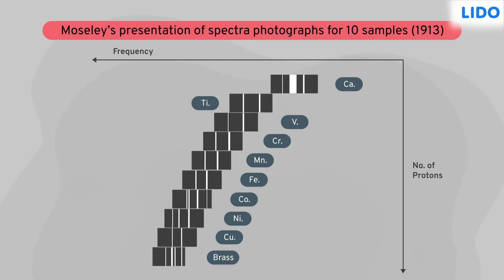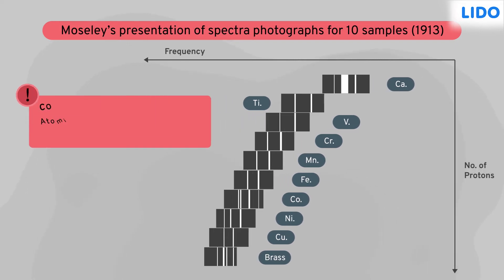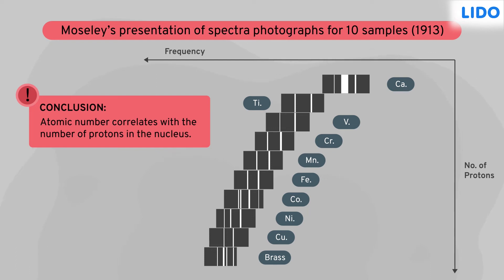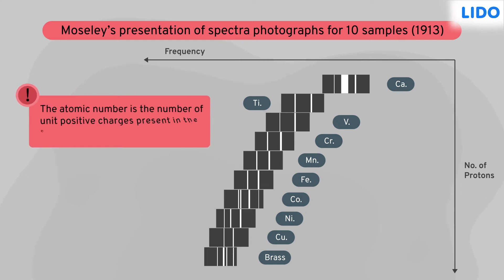With these observations, he calculated the total number of protons in the nucleus of a particular element. Since he chose elements based on increasing atomic number, he concluded that the atomic number correlates with the number of protons in the nucleus. The atomic number is the number of unit positive charges present in the nucleus of an atom.